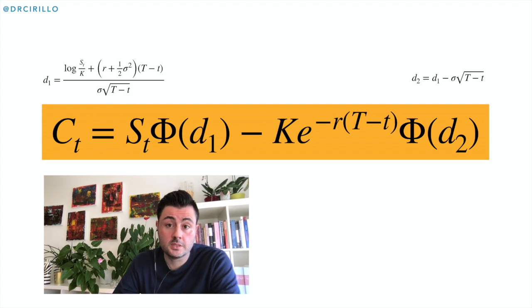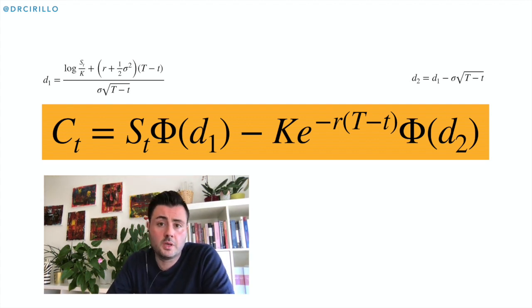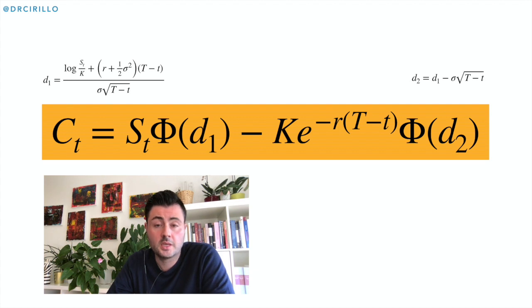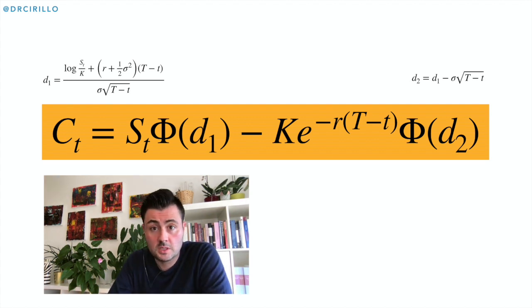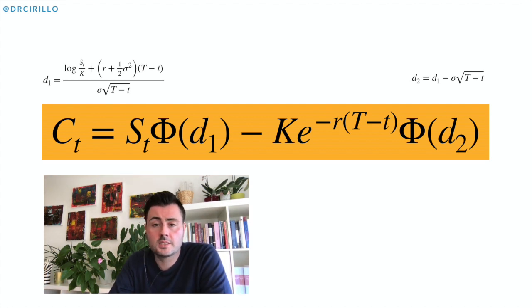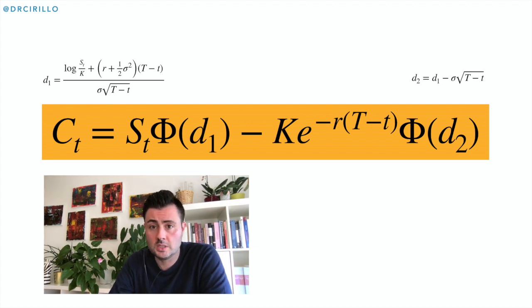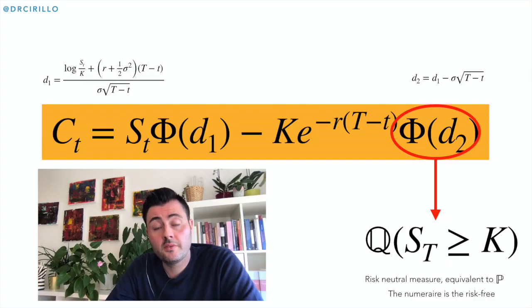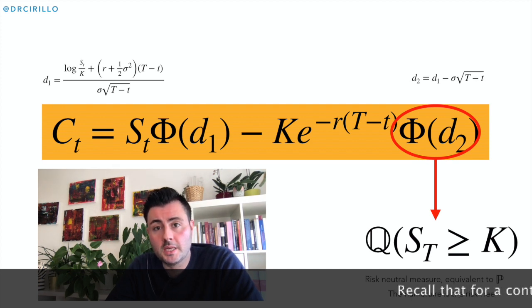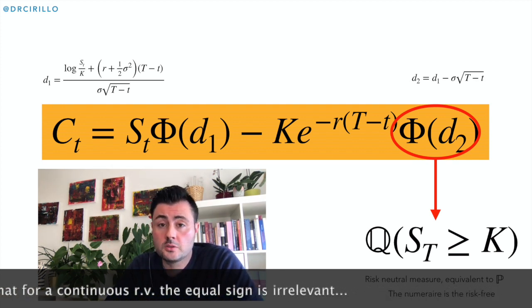What you see on your screen is the value at small t of a European call on an asset whose underlying price follows geometric Brownian motion, denoted ST, with strike price K, at maturity T. The formula includes different terms, but what are important for us are the two CDFs of a standard normal: Phi evaluated in D1 and Phi evaluated in D2. You can easily verify — and please do that as a very useful exercise — that Phi(D2) totally corresponds to the probability of being in the money at maturity under the risk-neutral measure Q.